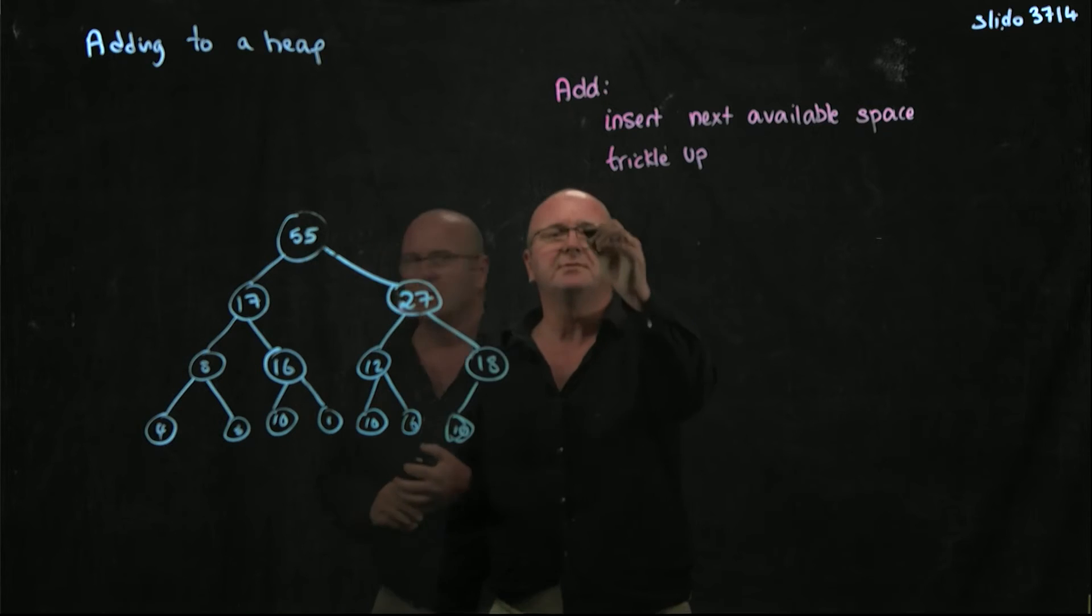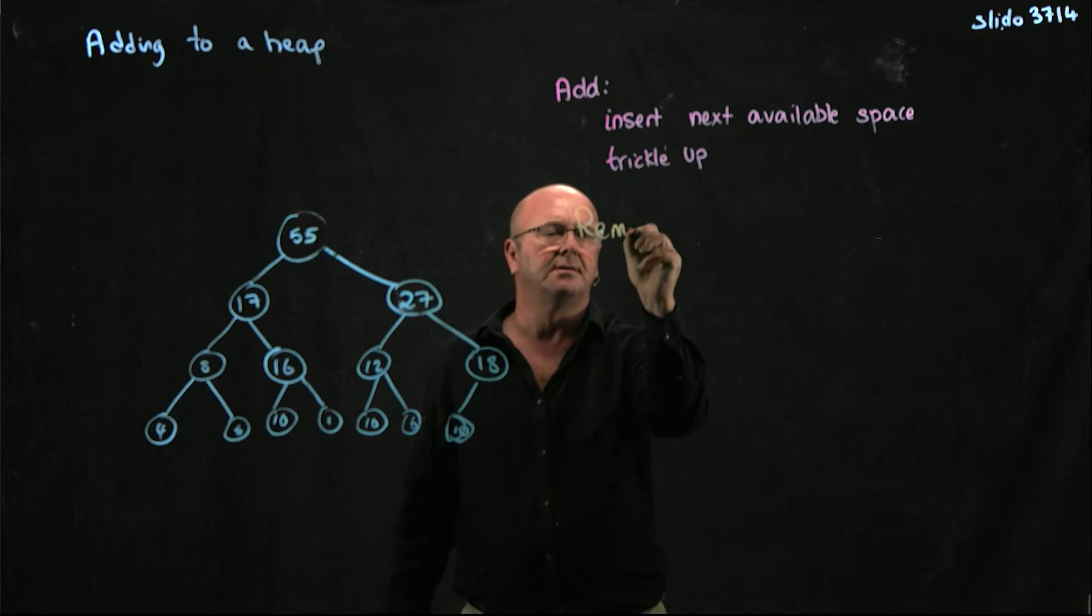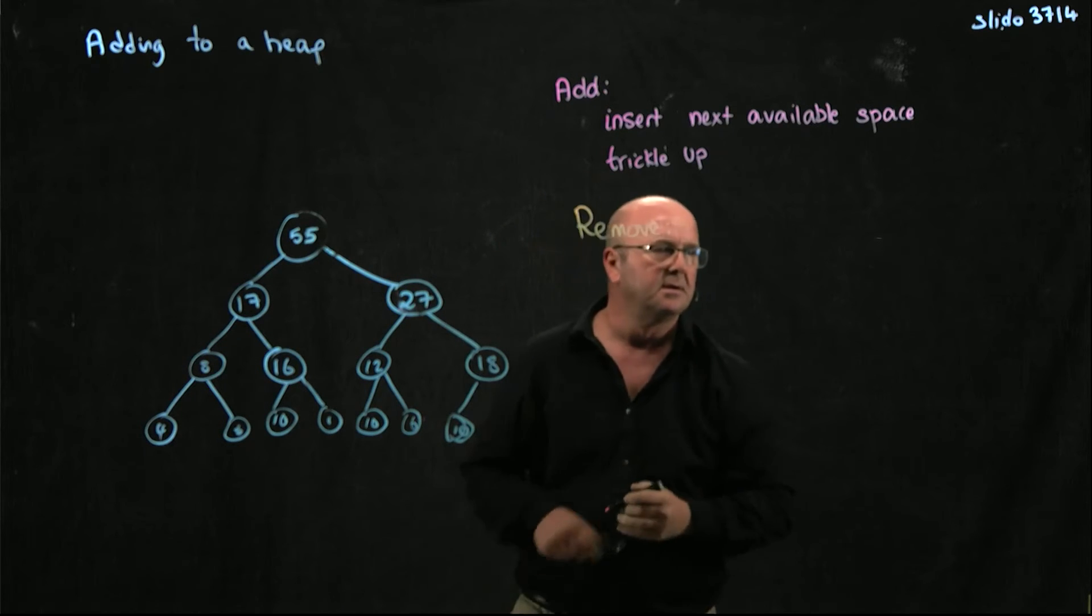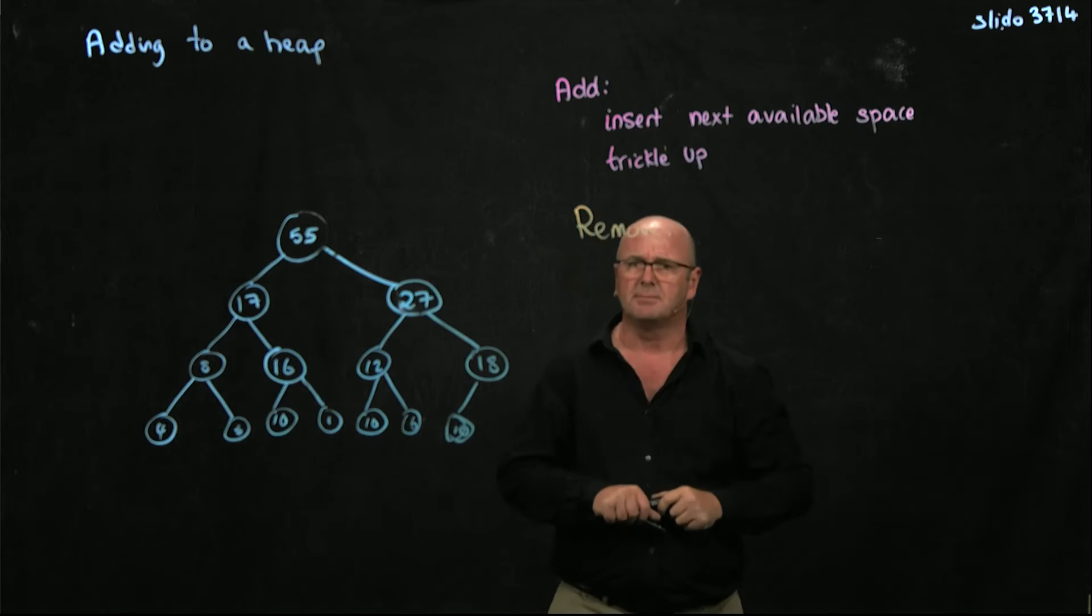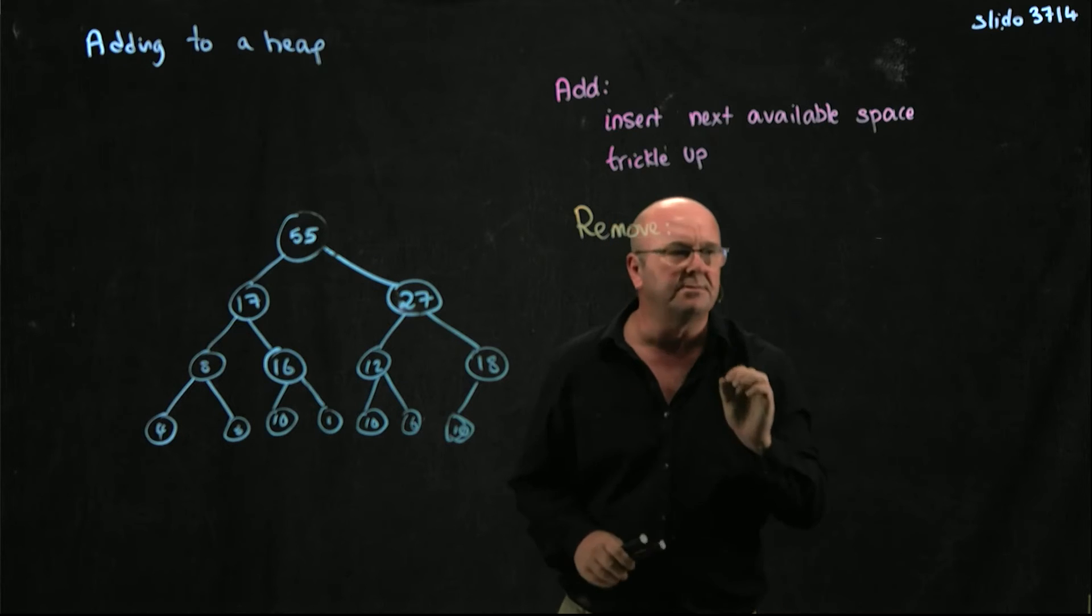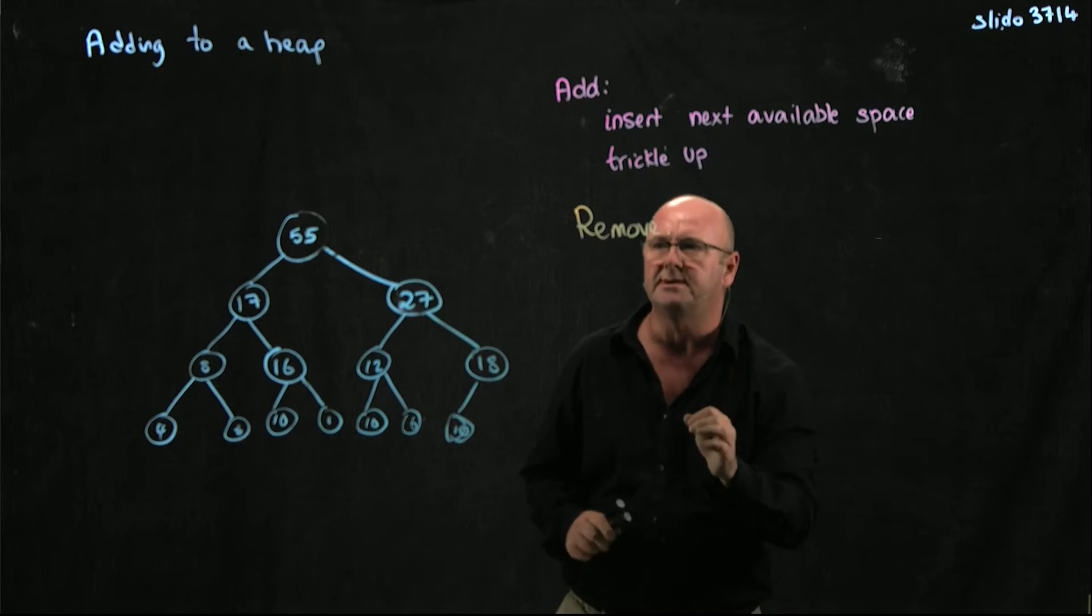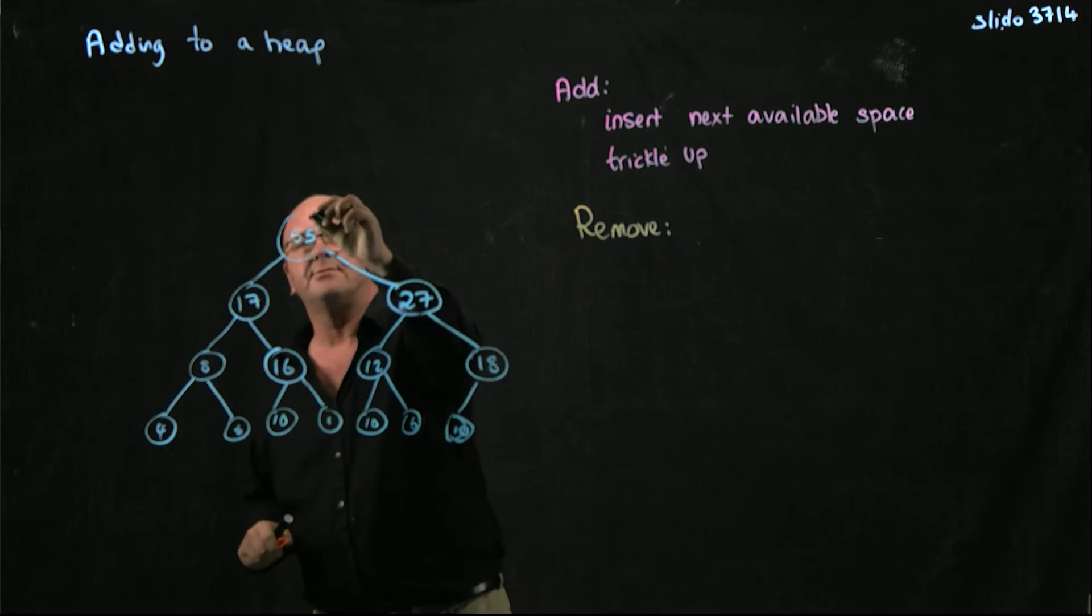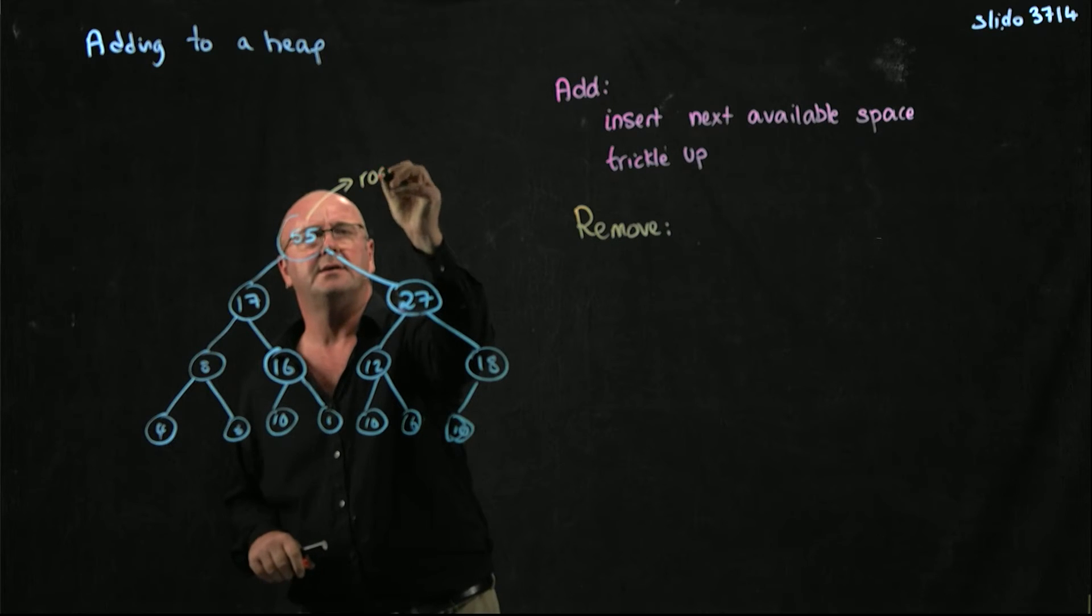So how do I actually remove something from the heap? The way that you do that is that in a heap, you always take the root element away.